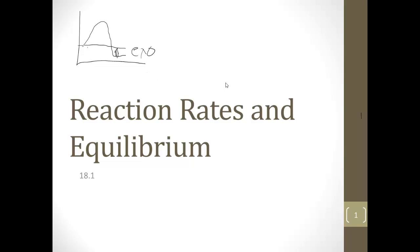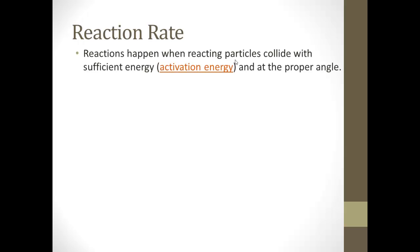The heat of the reaction is the difference between these two, and this diagram is drawn for an exothermic reaction. In order for a chemical reaction to actually take place, the reactants have to come into contact with each other. The more they're able to collide, the faster the reaction. These reactions happen when reacting particles collide with sufficient energy — that's the activation energy — and the proper angle, when they hit each other just right.